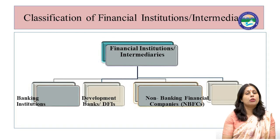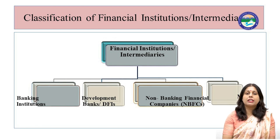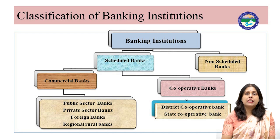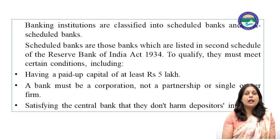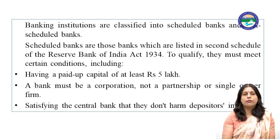Financial institutions are categorized into banking and non-banking financial institutions. Non-banking institutions include development banks, non-banking financial corporations, and mutual funds. Banking institutions are further categorized into scheduled banks and non-scheduled banks. Scheduled banks are those banks which are listed in the second schedule of the Reserve Bank of India Act 1934, and they must fulfill certain conditions, such as having a paid-up capital of at least Rs. 5 lakh.